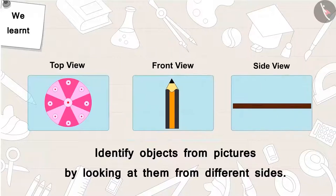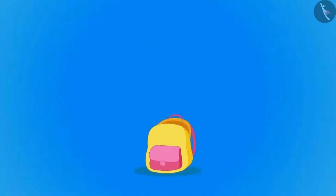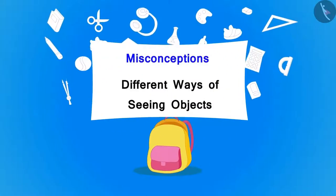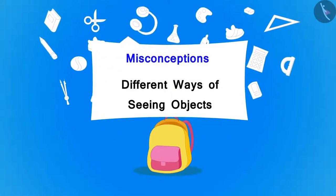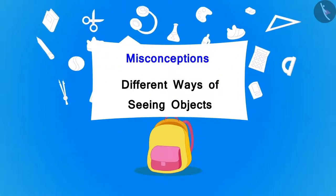In the previous video, we learned to identify objects with pictures looking at them from different sides. In this video, we will learn some misconceptions about seeing objects from different sides.